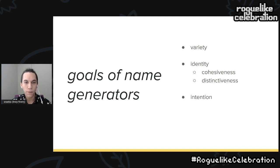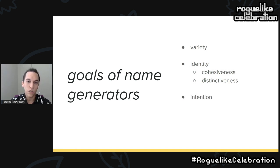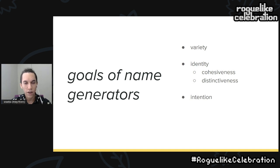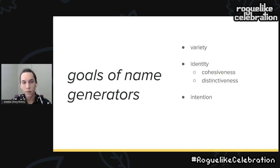On a functional level, we want the names each generator produces to feel intentionally formed. What this means precisely is a matter of interpretation, but we at least want to keep names that read as generation errors to a minimum. We should also hope that our names are generally pronounceable, whether the pronunciation people arrive at is correct or not. If you can't find any way to pronounce a name that's in front of you, it'll have a harder time sticking in memory and risks degenerating into noise and being forgotten.